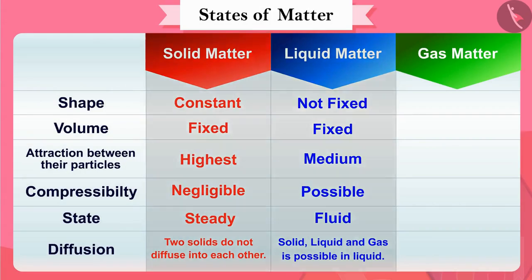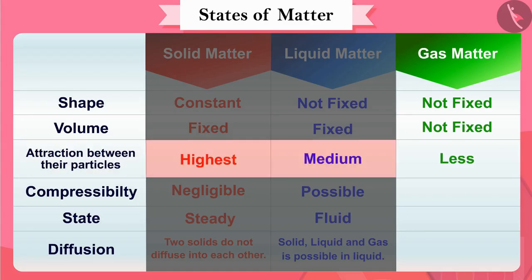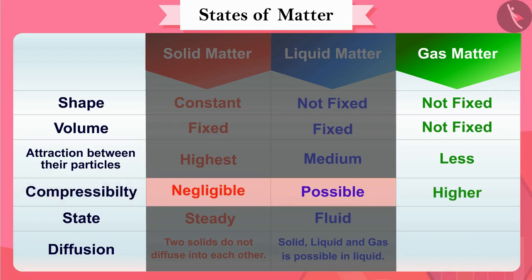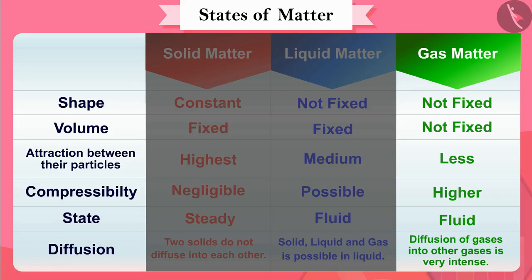As we have seen, the shape and volume of gaseous matter are not fixed. The attraction between particles of gaseous matter is less than that of solid and liquid, as particles of gaseous matter have more space. Therefore, the compressibility of gaseous matter is much higher than that of solids and liquids. Even in the gaseous state, the substance is not rigid but a fluid, and diffusion of gases into other gases is very intense.